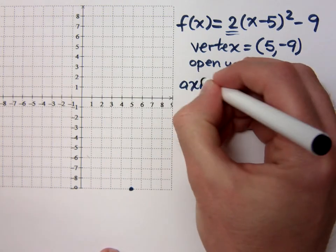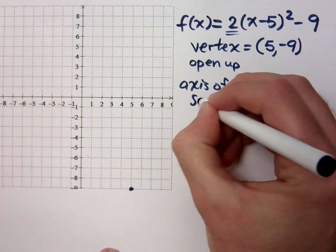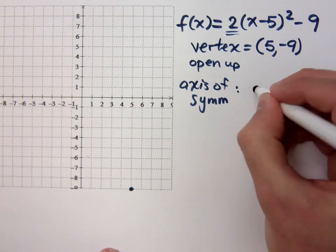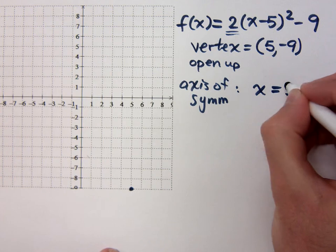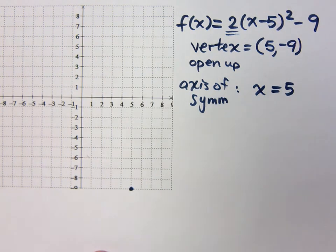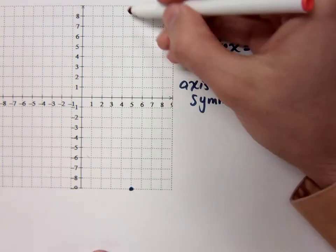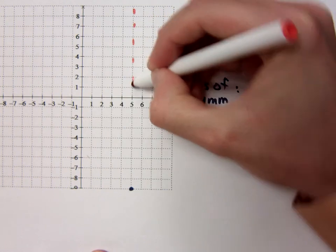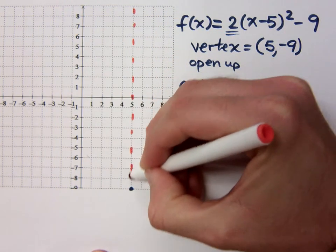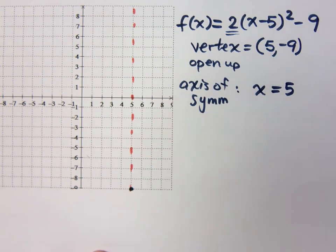So this is my vertex. What is your axis of symmetry? It's x equals 5, which means when I come over here to graph this, I will have this vertical line going through x equals 5, right?